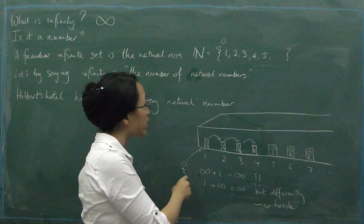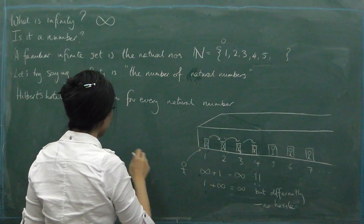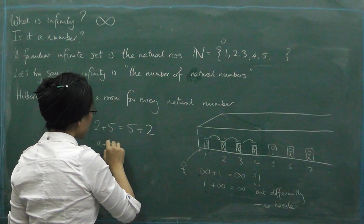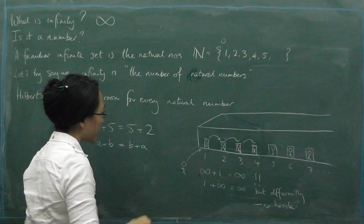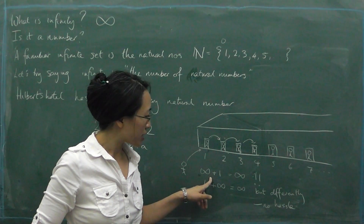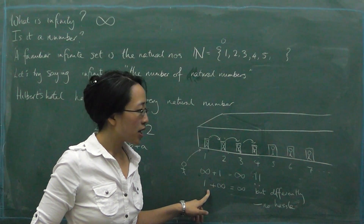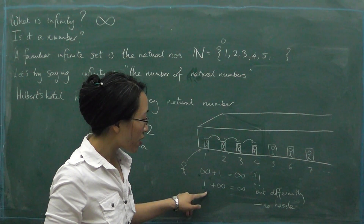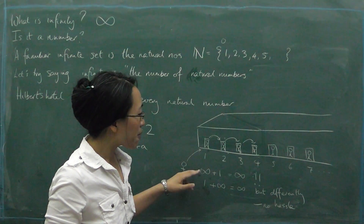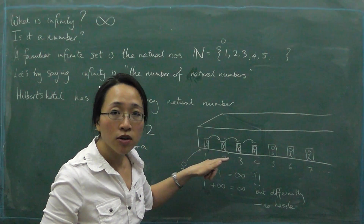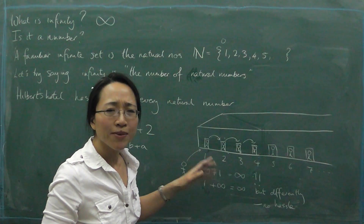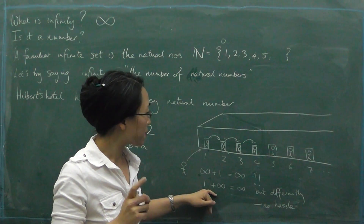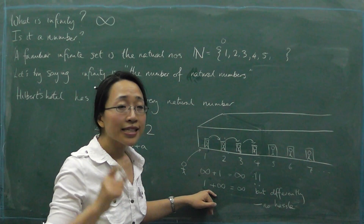This is the first clue about what has been going wrong with infinity. With ordinary numbers, addition is commutative — two plus five always equals five plus two, and in general a plus b equals b plus a. But here we have a situation where infinity plus one and one plus infinity are different. There's actually a way of thinking about infinity called ordinal arithmetic where it matters whether everybody had to move room or not.